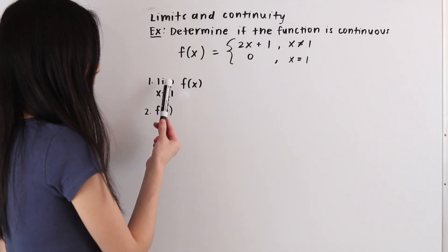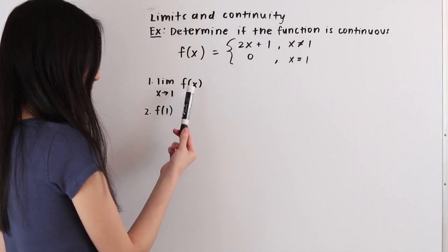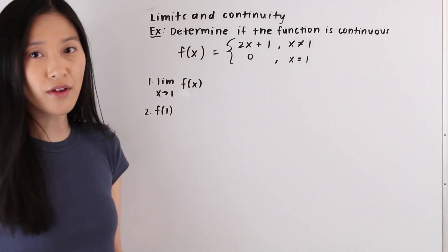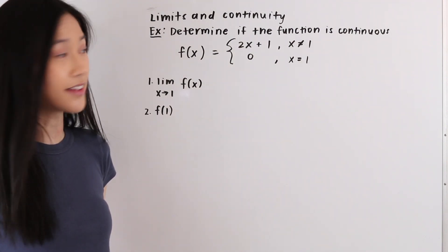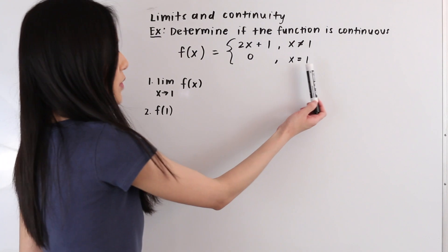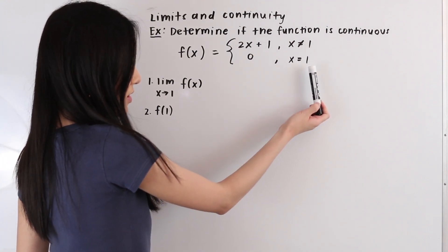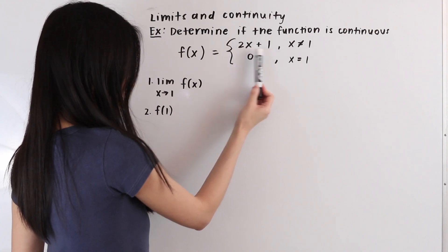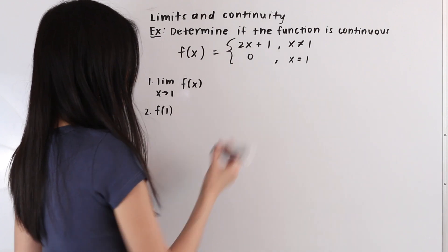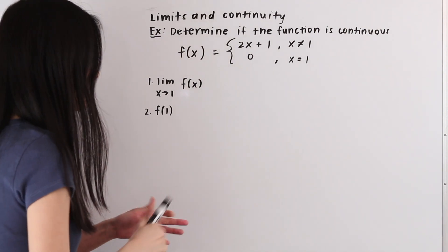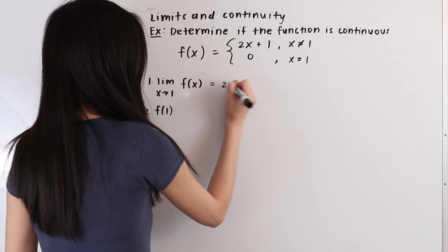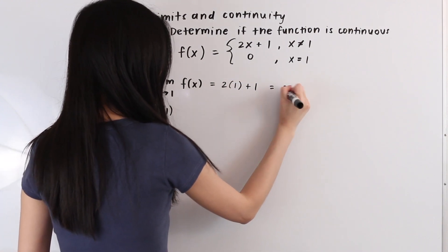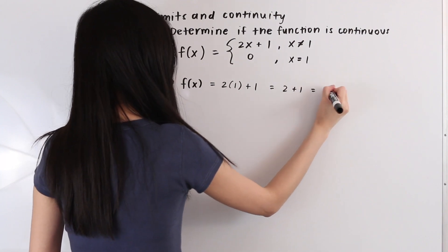Let's determine what the limit as x approaches one of f(x) is equal to. We're just concerned with the behavior as x approaches one from the left-hand side and the right-hand side, so we don't care what's happening at exactly x equals one. We plug x equals one into the top function: two times one plus one equals two plus one, which equals three.